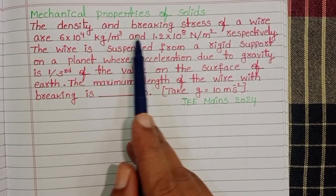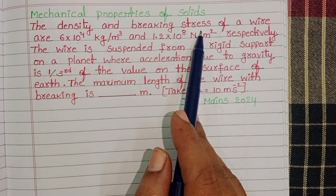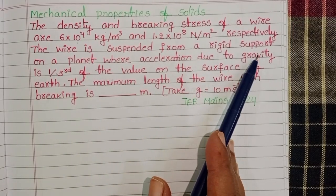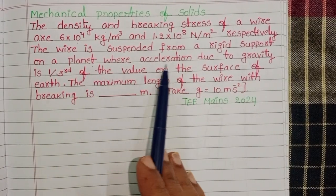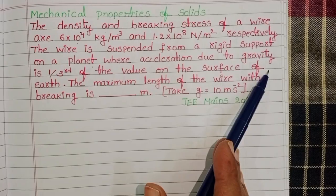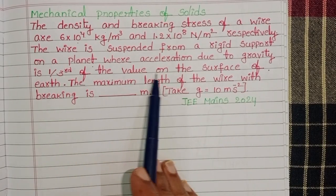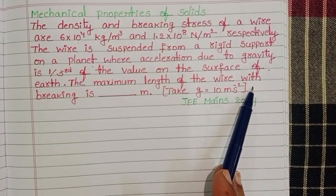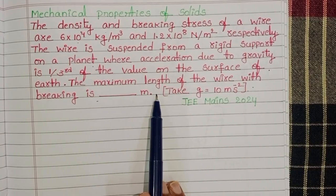In this question, we know the density and breaking stress of a wire. The wire is suspended from a rigid support on a planet where acceleration due to gravity is one third of the value on the surface of the earth. The maximum length of the wire with breaking is dash meters.